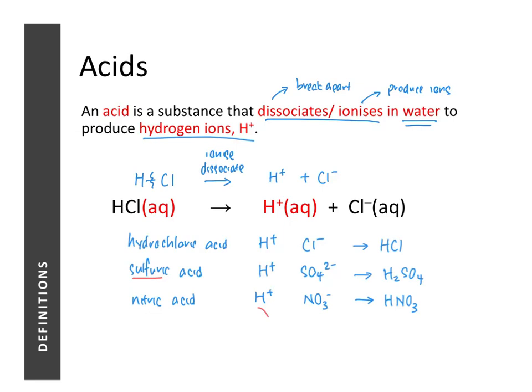The last keyword is water. For an acid to have acidic properties, it must first dissolve or dissociate in water. For example, if hydrogen chloride is dissolved in an organic solvent rather than water, it will not produce hydrogen ions and will not behave like an acid. So to summarize: acids produce hydrogen ions by dissociating in water — they must be soluble in water before they can behave like an acid.